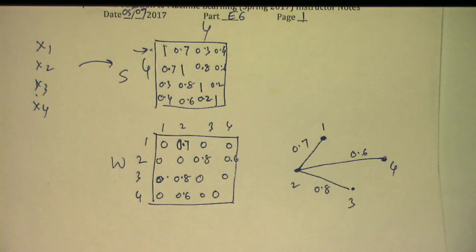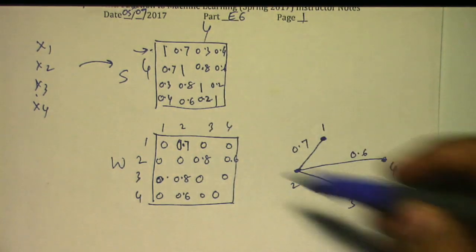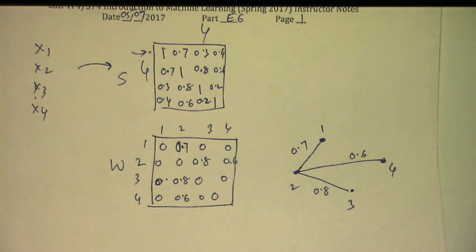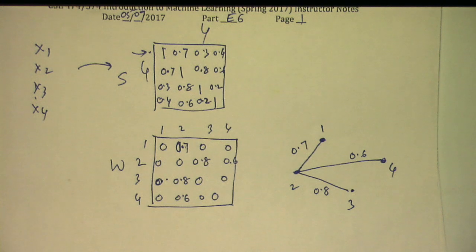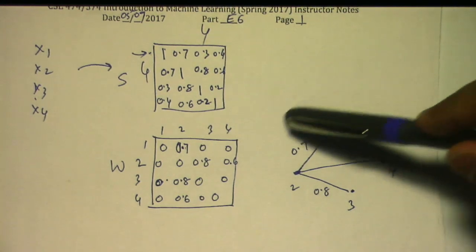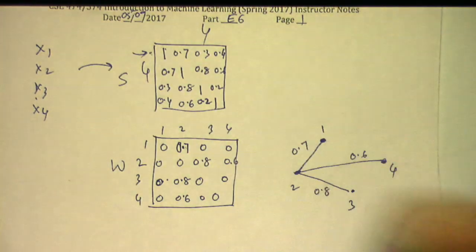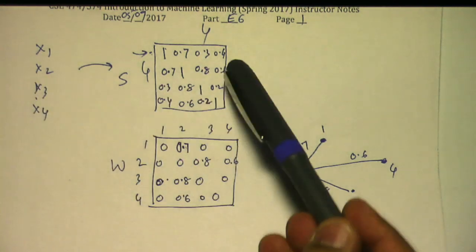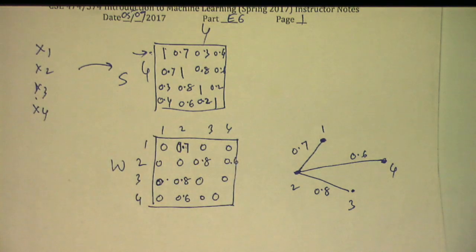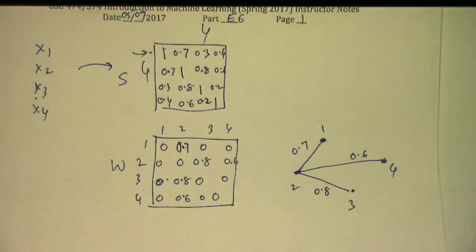Spectral clustering takes data and converts it into a graph, then does graph clustering. If your data is already a graph you start from this step directly. You can also think of it as a kernel method: as long as there's a similarity metric defined for pairs of objects you can construct the graph, even if the objects aren't in a traditional vector space.